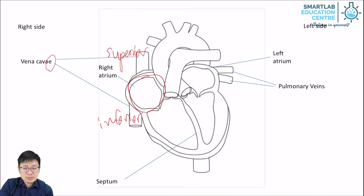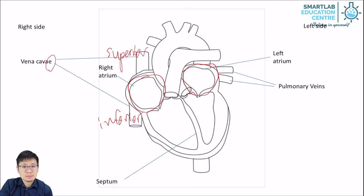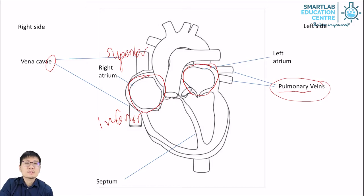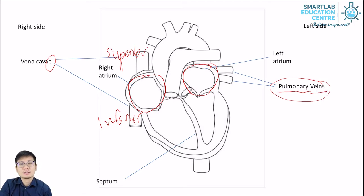That's for the deoxygenated blood side. On the other side, we have the left atrium. The left atrium receives oxygenated blood from the lungs coming through the pulmonary veins. Now when you see the word 'pulmonary', it means it's connected to the lungs. The pulmonary veins means that it's carrying blood from the lung back to the heart — veins bring blood back to the heart.